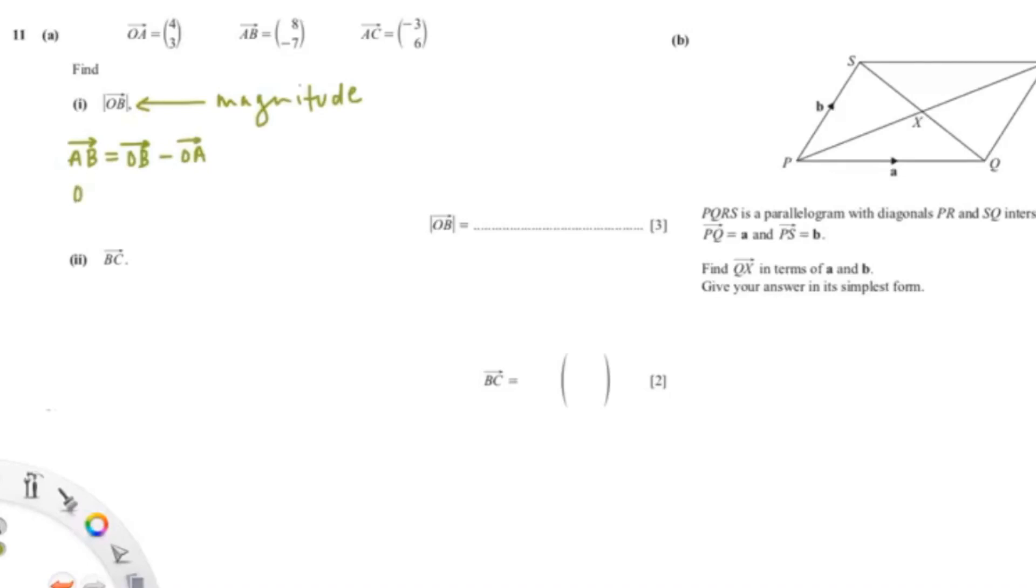Since we're finding OB, we're going to shift OA to the other side. So that would be AB plus OA, giving us negative 7 plus 4 and 3.